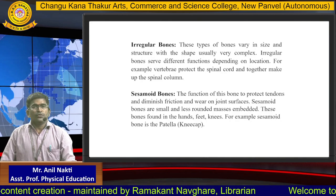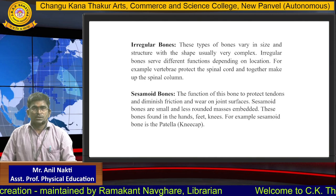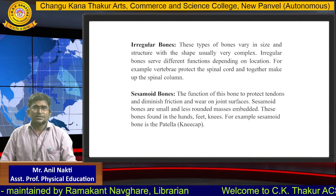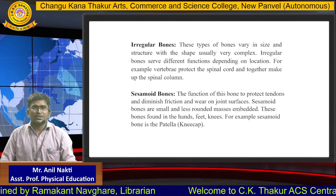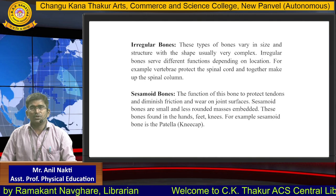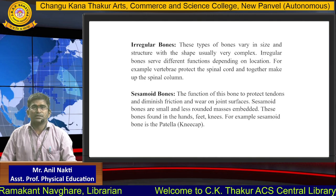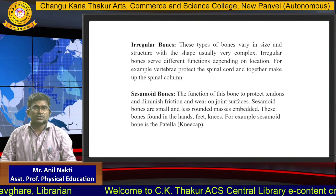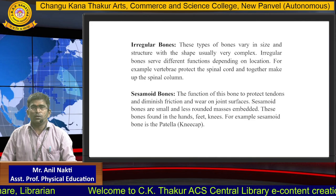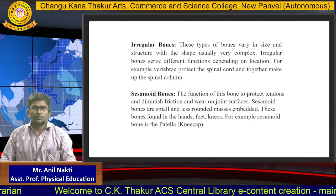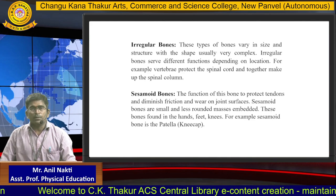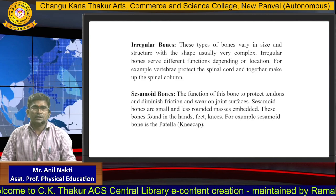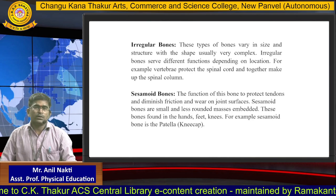The fourth type is irregular bones. These types of bones vary in size and structure, with the shape usually very complex. Irregular bones serve different functions depending on their location. For example, vertebrae protect the spinal cord and together make up the spinal column.